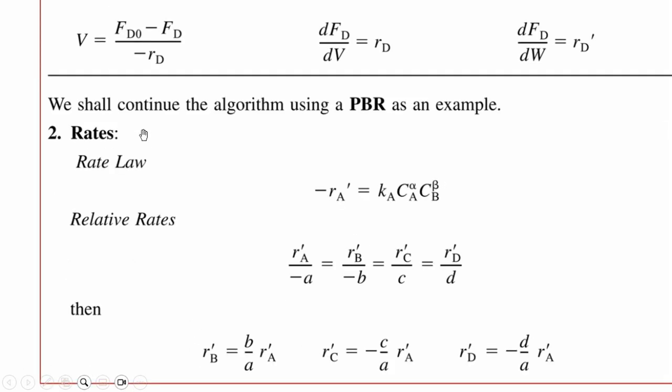Accordingly applying rate and assuming that we shall continue the algorithm using PBR as an example, -rA' = kA·CA^α·CB^β. This is our kinetic equation, rate equation, or power law equation if you remember our previous lectures.